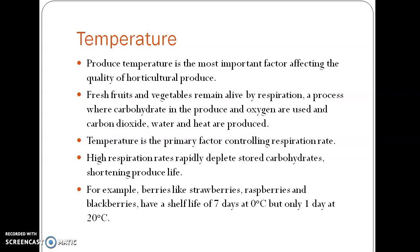Temperature is the most important factor affecting the quality of horticultural produce. Fresh fruits and vegetables remain alive as they respire. Respiration is a process where carbohydrates and oxygen are used and carbon dioxide, water, and heat are released. Temperature is the primary factor controlling the respiration rate, and a high respiration rate depletes more carbohydrates and shortens the produce shelf life.